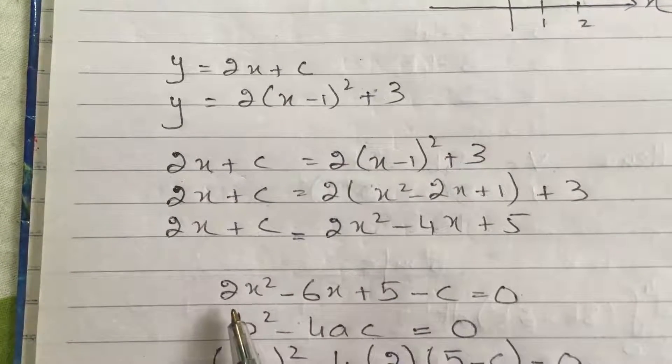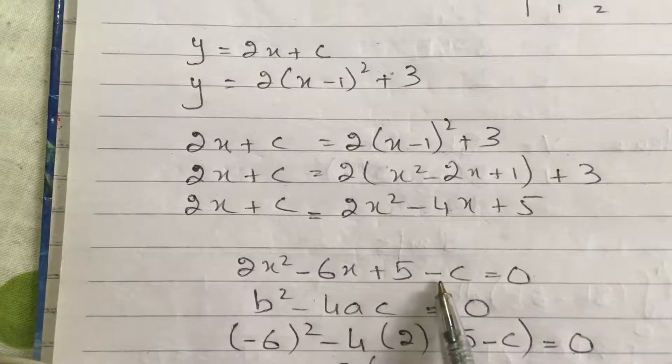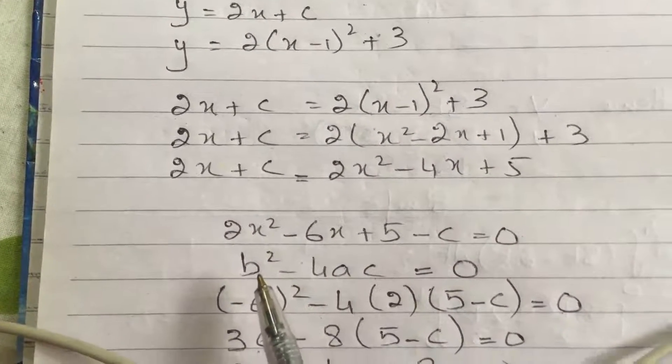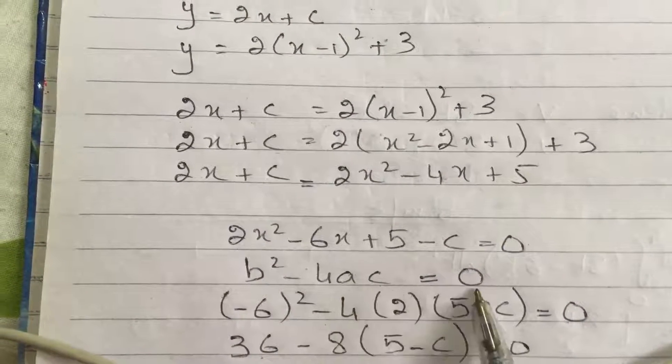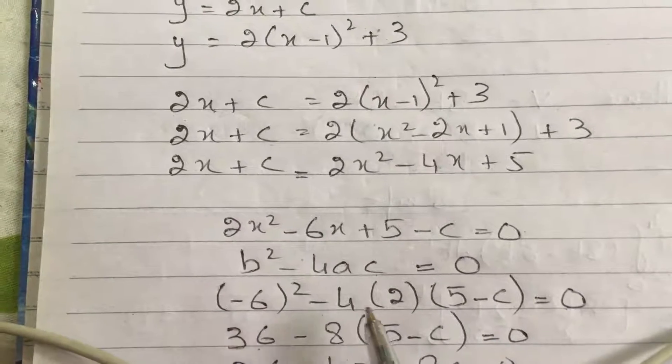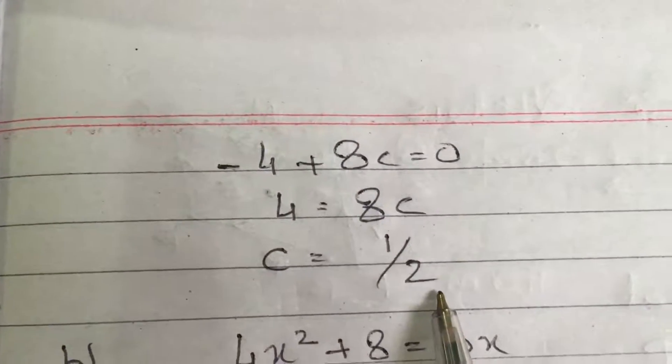And now my a is 2, my b is minus 6 and my c is 5 minus c, with respect to a general quadratic equation. Now because the line is tangent to the curve, the discriminant is equal to 0. So I will substitute the values of a, b, c here, and then I will solve it, which will give me the value of c equals 5/2.